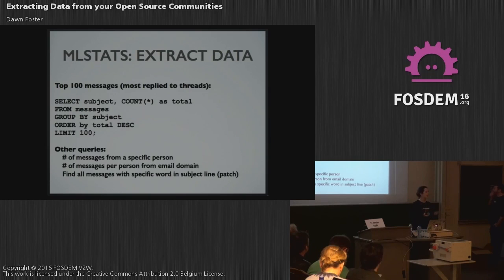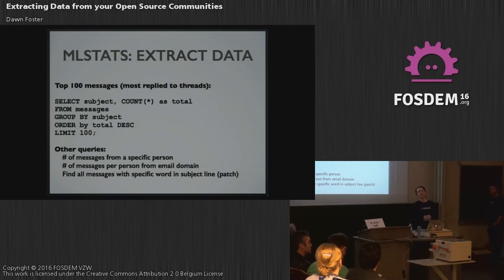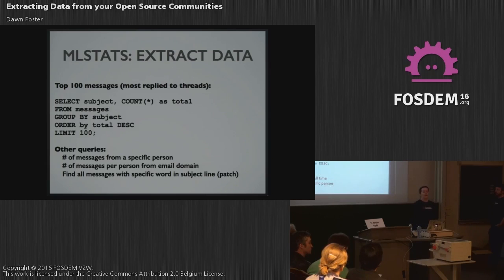Then you can write some pretty simple SQL queries to extract that data depending on what you want to look at. This is just a quick example of a query that looks at the most replied threads in your mailing list — it looks at the top 100 messages. Other queries you can run: you can get the number of messages from a specific person, the number of messages per person from a specific email domain to see everybody from a certain company that participated, or find all messages with a specific word in the subject lines — like all mailing list posts that mention the word 'patch' or a certain subcomponent of your project.